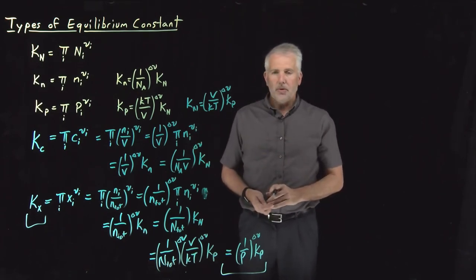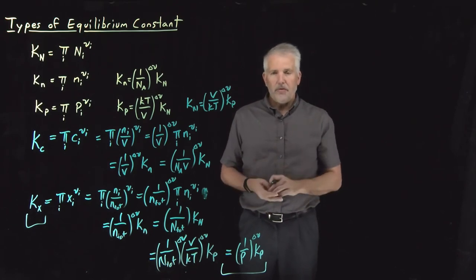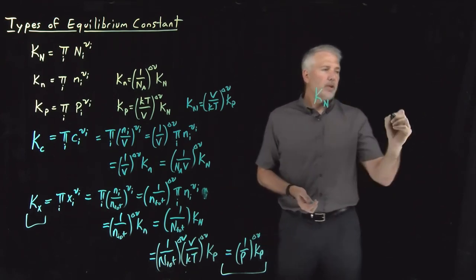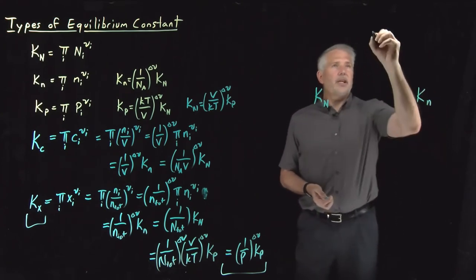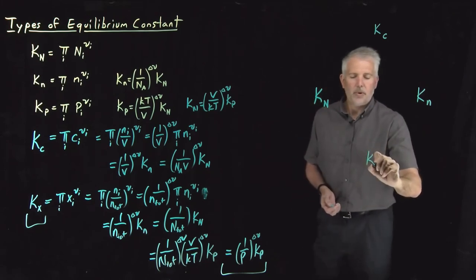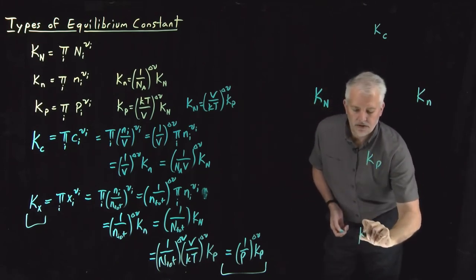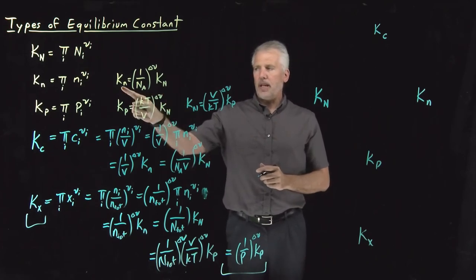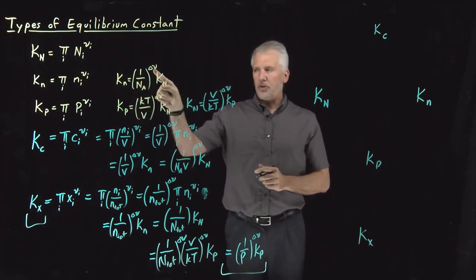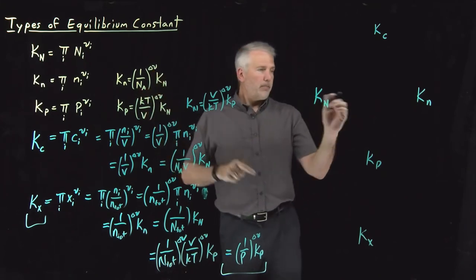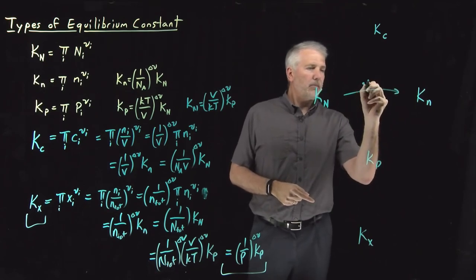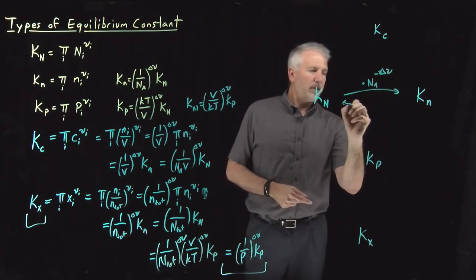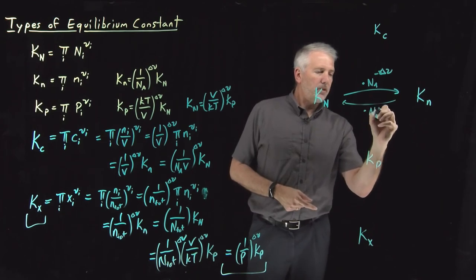That's a lot of equations to keep track of for converting one type of equilibrium constant to another, so let me organize them into a diagram. Starting with KN and Kn: to go from KN to Kn, multiply by Avogadro's number to the negative Δν; to go in the opposite direction from Kn to KN, multiply by Avogadro's number to the positive Δν.